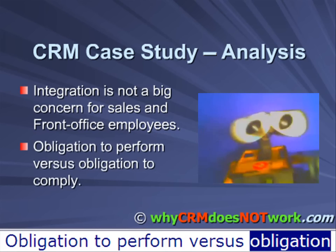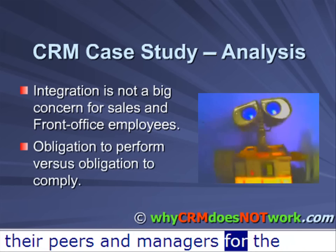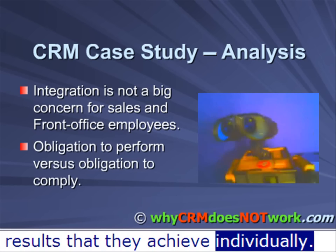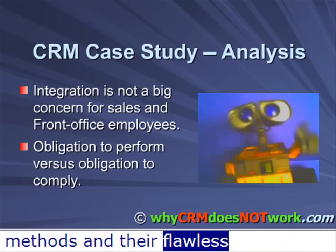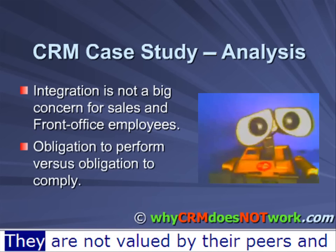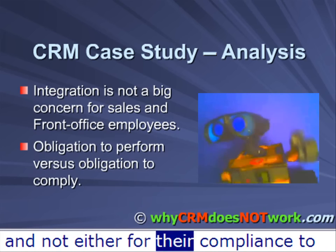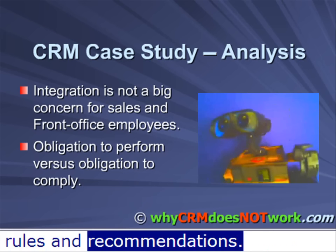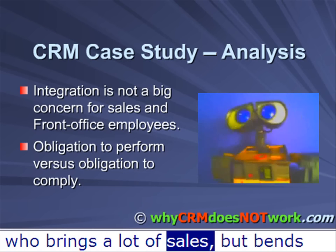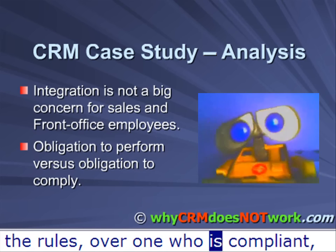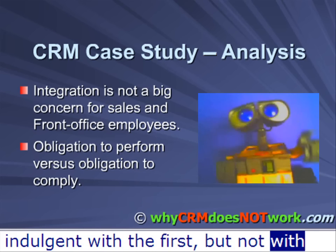Obligation to perform versus obligation to comply. Front-office employees are valued by their peers and managers for the results that they achieve individually. They are not valued for their adherence to set methods, their flawless contribution to the work of a team, or their compliance to rules and recommendations. Sales and general managers will always tend to favor a salesperson who brings a lot of sales but bends the rules over one who is compliant but sells less. They will tend to be indulgent with the first, but not with the second.